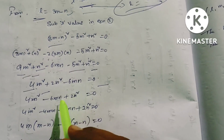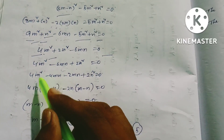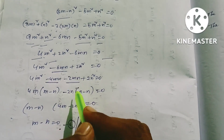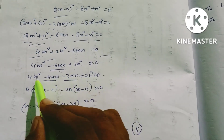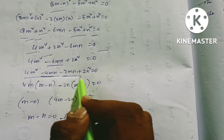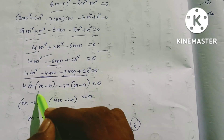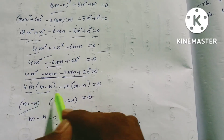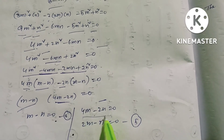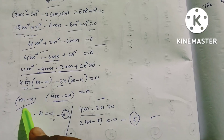Factorizing 4M² - 6MN + 2N² = 0: we get (M - N)(4M - 2N) = 0. Taking out factor 2: (M - N) · 2(2M - N) = 0. So either 2M - N = 0 (equation 6) or M - N = 0 (equation 5).